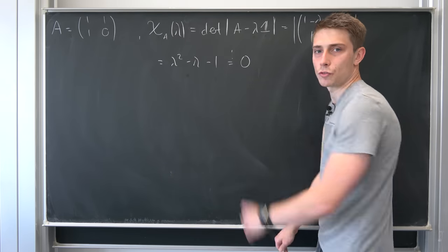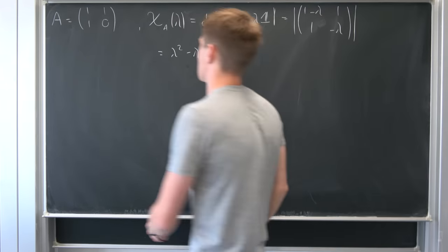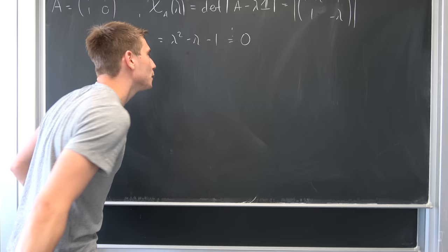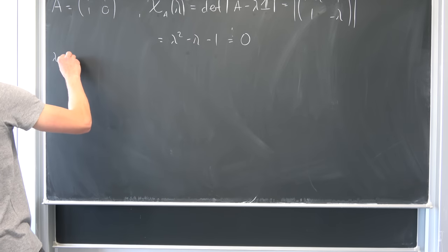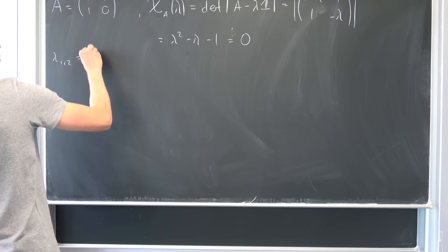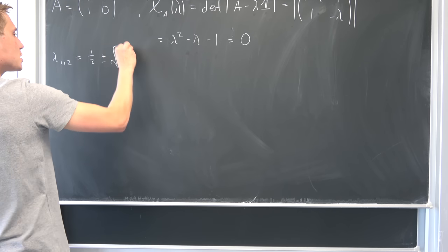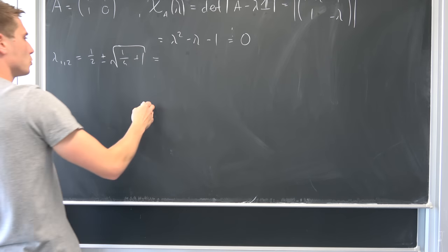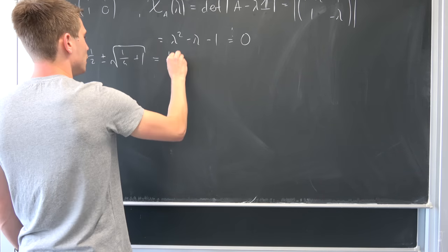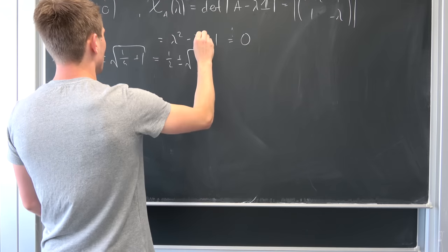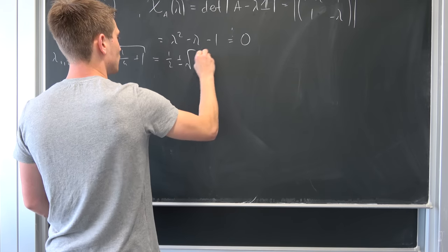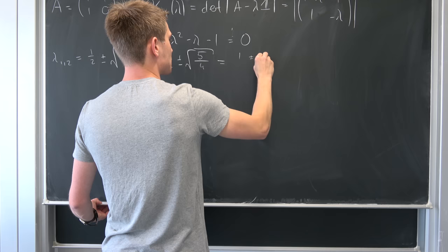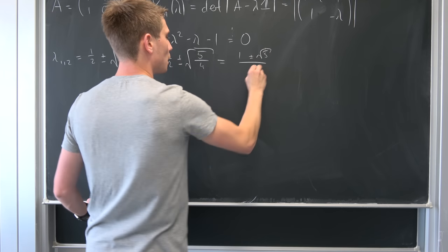Finding the zeros of this is quite easy — just use the quadratic formula. That means lambda_{1,2} are nothing but one half plus/minus the square root of one quarter plus one, which is one half plus/minus the square root of five over four. This simplifies to one plus/minus the square root of five, all over two.